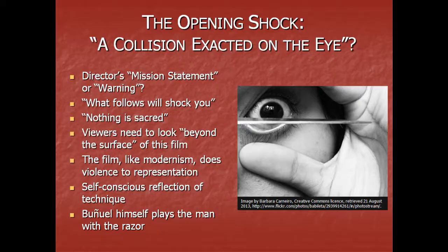Let's think about the opening shock — a collision exacted on the eye. How do we interpret the slitting of the eye in the opening sequence? Is it the director's mission statement or a warning — is it saying what follows will shock you? Is the film informing the audience that they will be shocked by shocking them? Is it implying that nothing is sacred? This could be connected with Buñuel's critical attitude towards religion. Is it suggesting that viewers need to look beyond the surface of this film, but they will not see anything? The film, like modernism, does violence to representation.